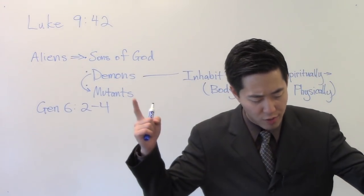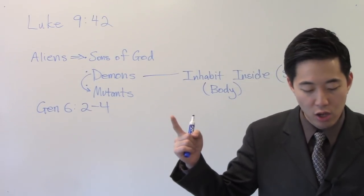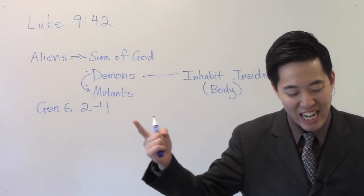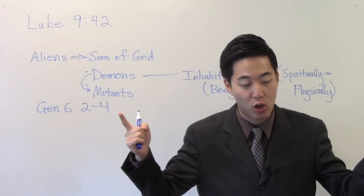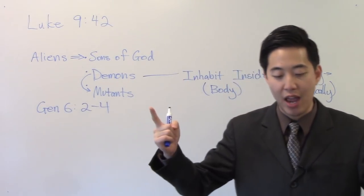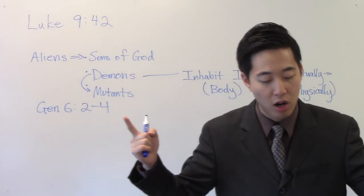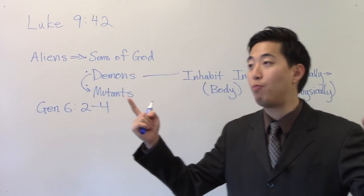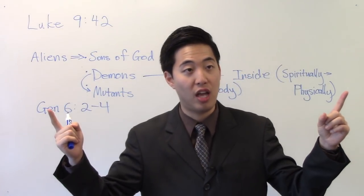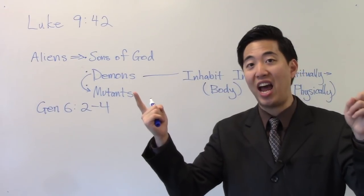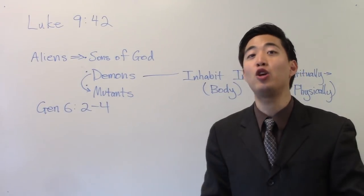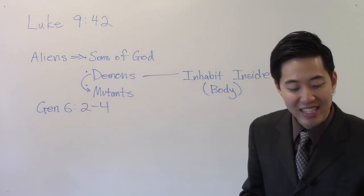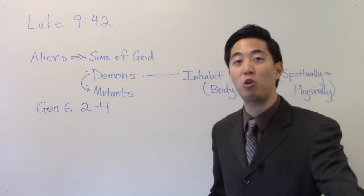Verse 42. And as the toes of the feet were part of iron and part of clay, so the kingdom shall be partly strong and partly broken. And whereas thou sawest iron mixed with miry clay, whoever iron is, whoever clay is, they shall mingle themselves with the seed of men. Notice we see the one category covered here. Seed of men, but we don't know who the they are.